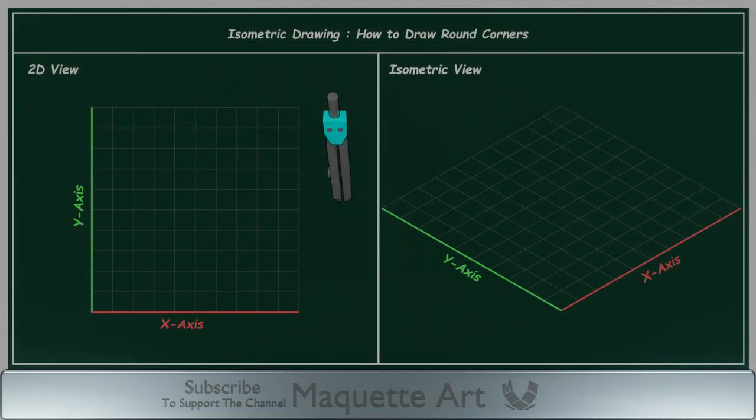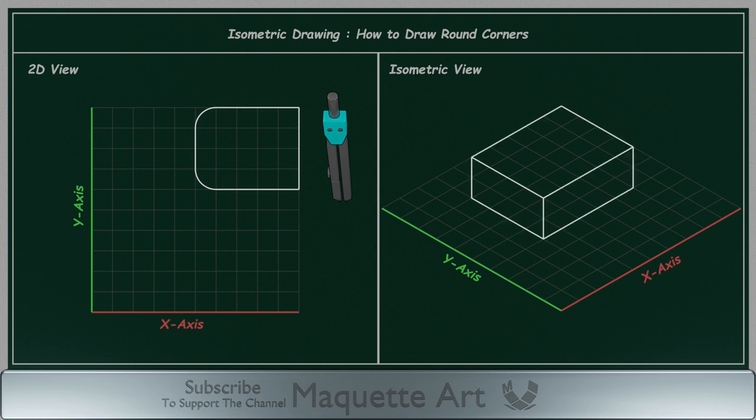In this video I will explain how to draw round corners. So instead of having sharp corners like this, we will add round corners with a specific radius. It is very simple and easy.